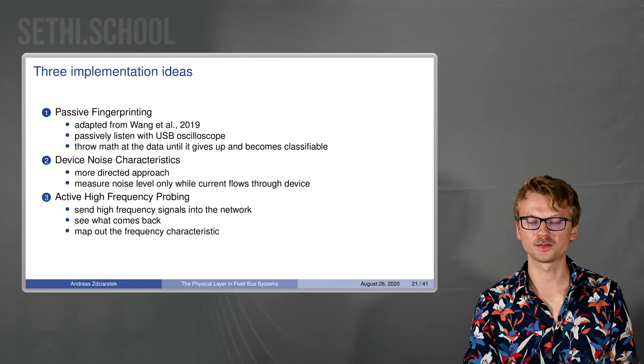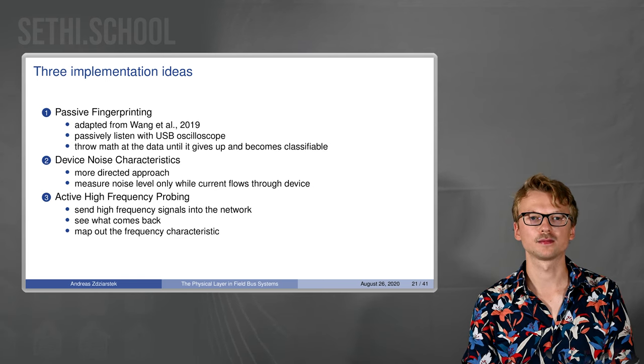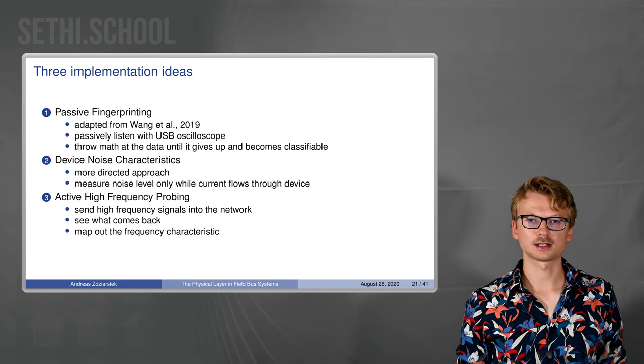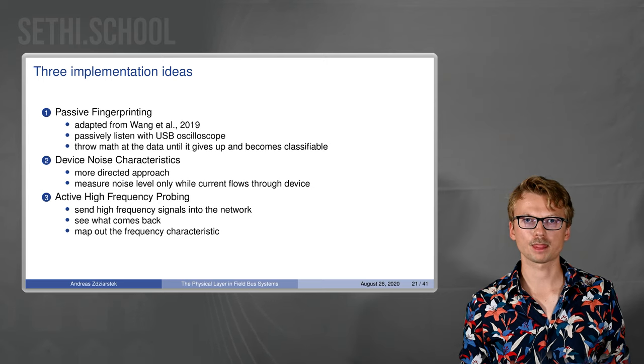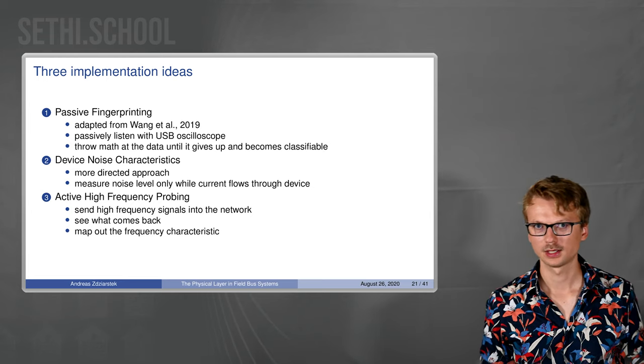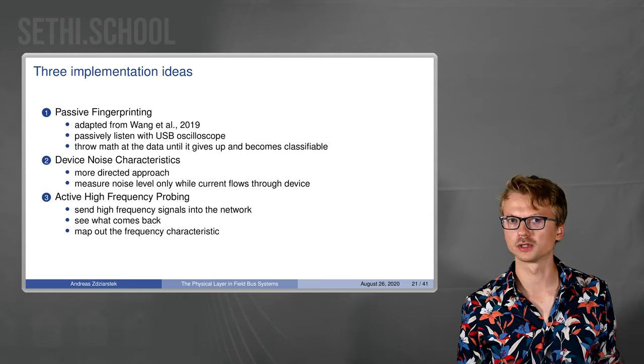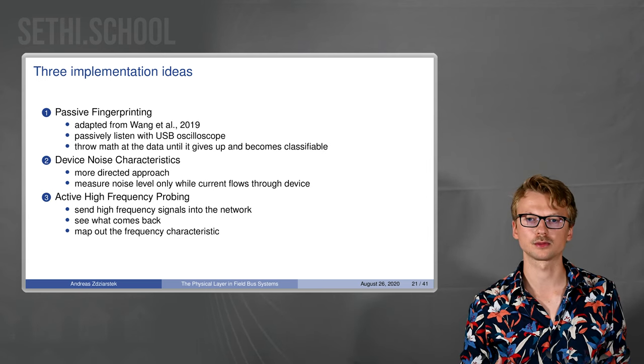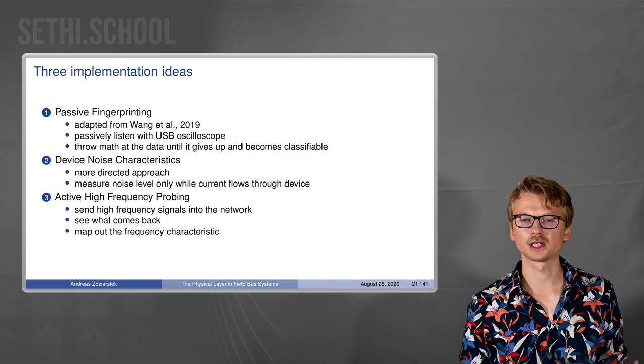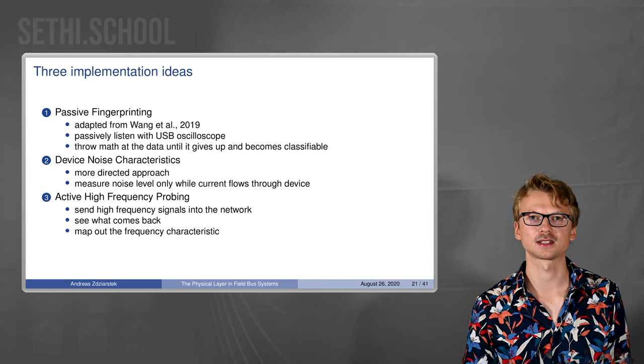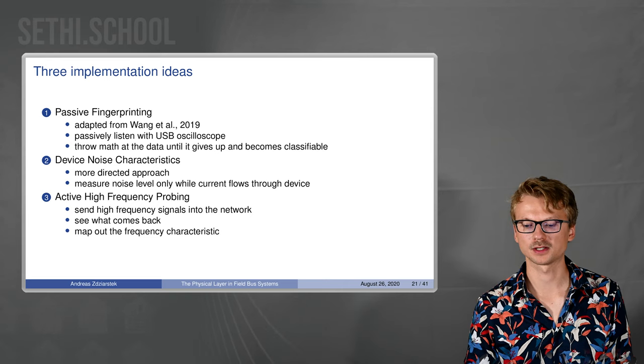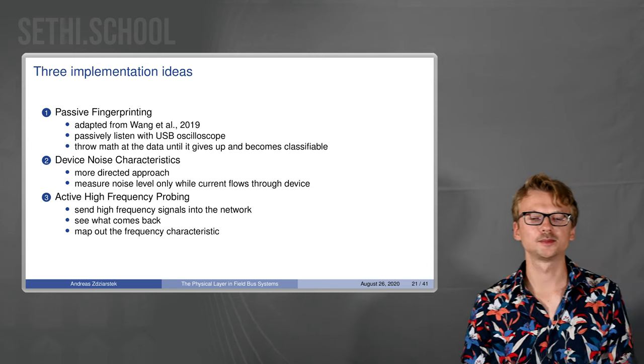Now what I actually did, my three ideas I implemented. First one, passive fingerprinting. It's adapted from something a few guys did in 2019 on wireless stuff. They were basically listening very hard to Wi-Fi traffic and then classifying the transmitters. I thought we could probably do the same on a wire with a USB oscilloscope. The general approach was that basically we throw math at the data until it gives up and becomes classifiable.